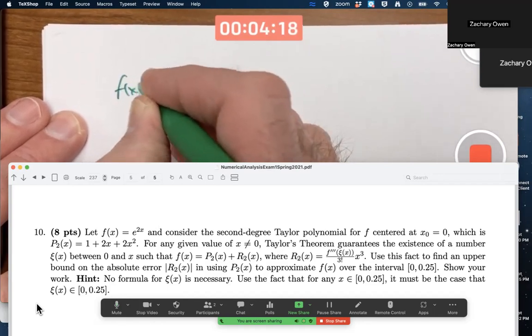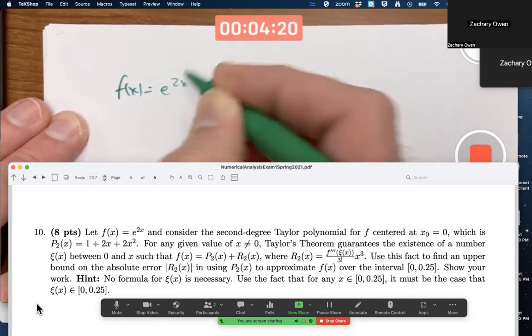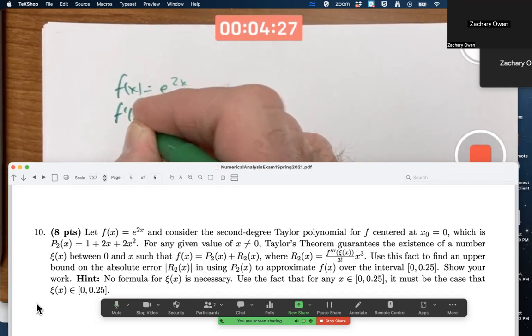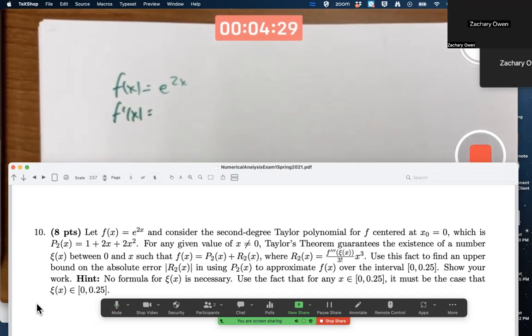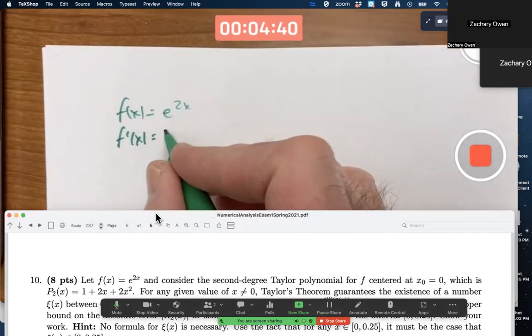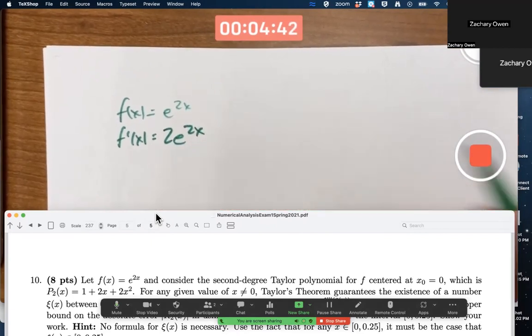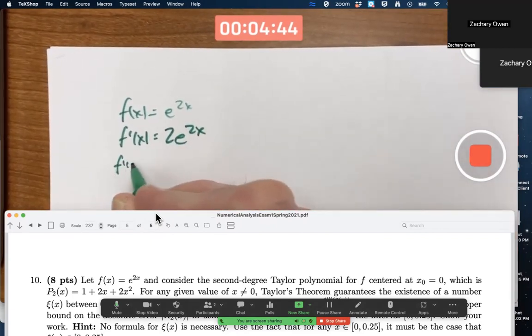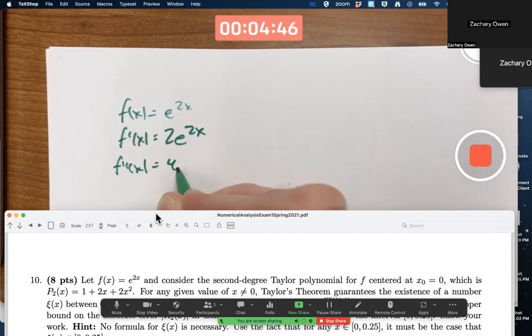So f of x is e to the 2x. f prime of x, we need to calculate the derivatives, is 2e to the 2x, and f double prime of x is 4e to the 2x.